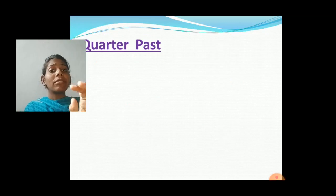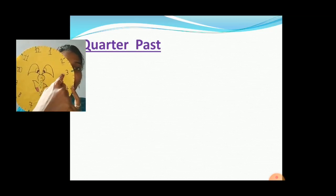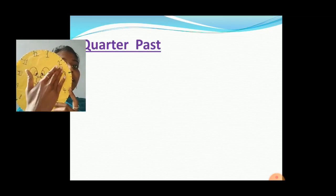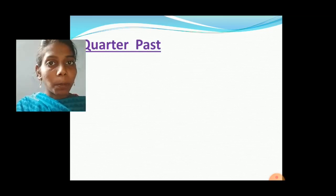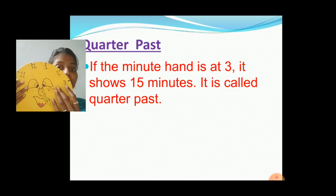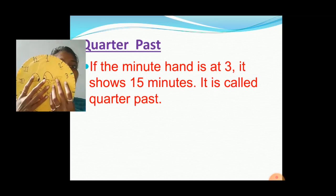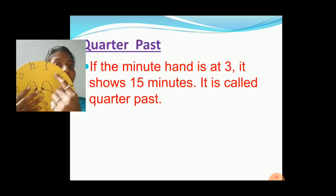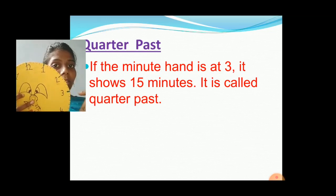Next, the important topic is quarter past. If we divide this clock into 4 parts — from 12 to 6 is one part — if we divide this clock into 4 parts, the first part is a quarter past. So if the minute hand is at number 3, it shows 15 minutes, correct? Because 5 threes are 15. And this 15 minutes means this first quarter part is called quarter past.